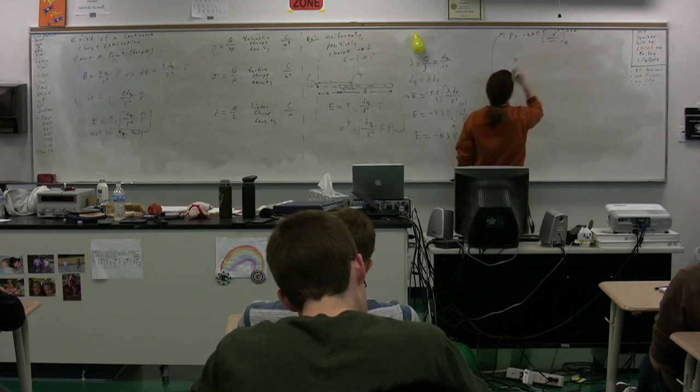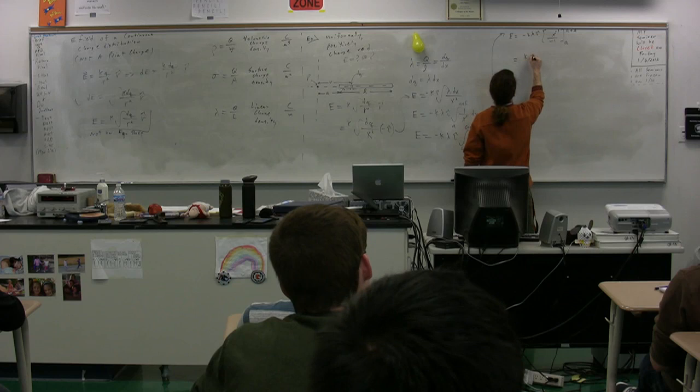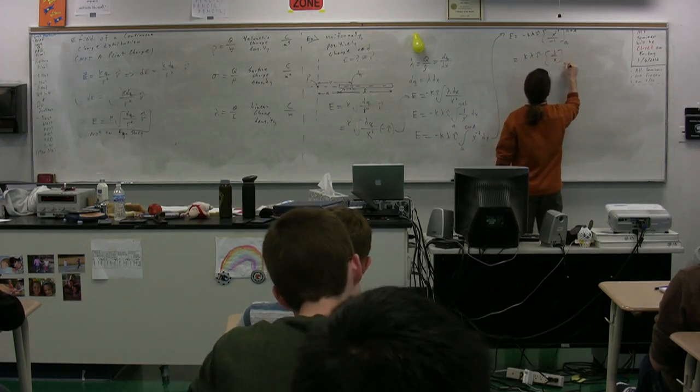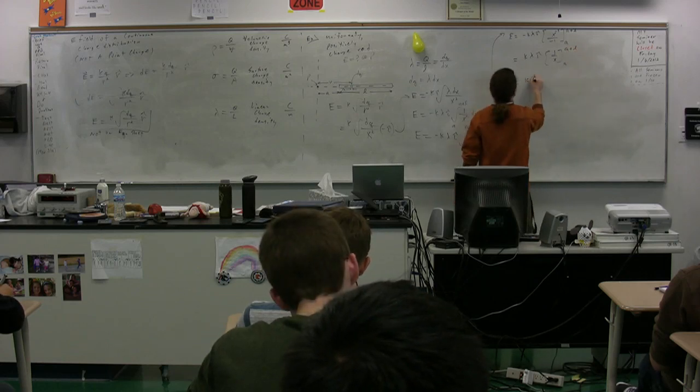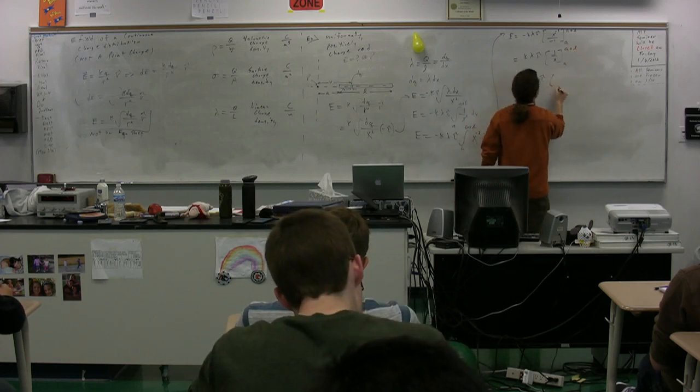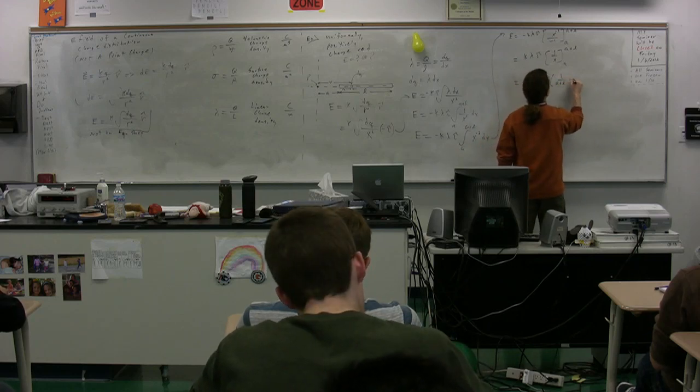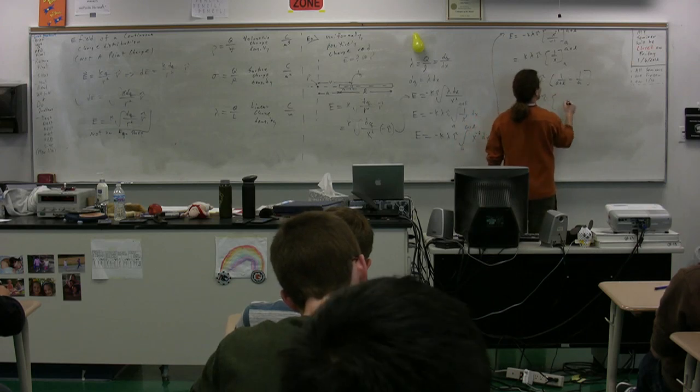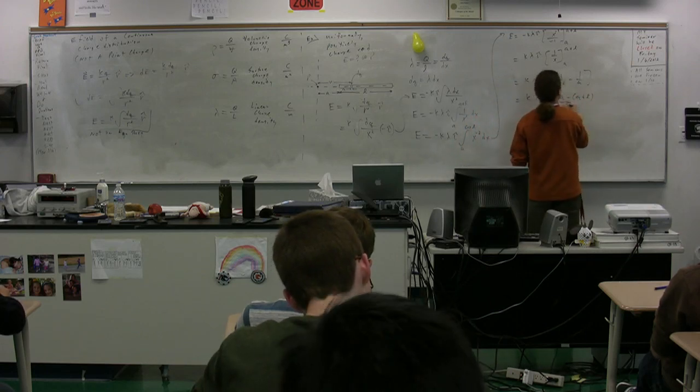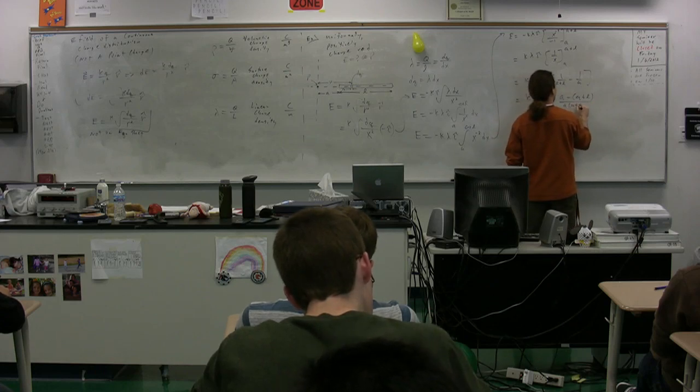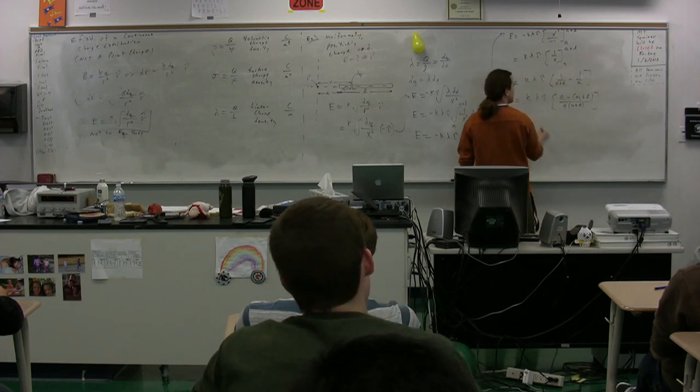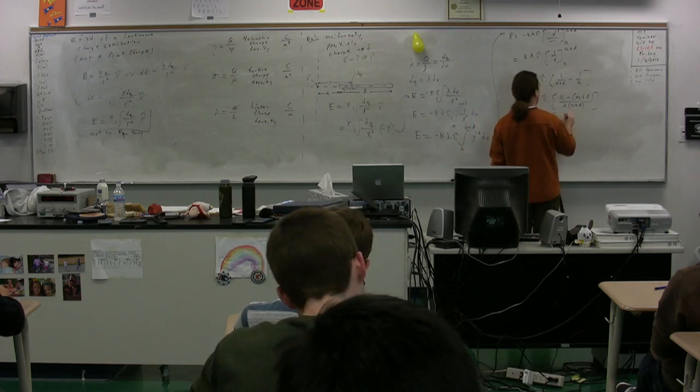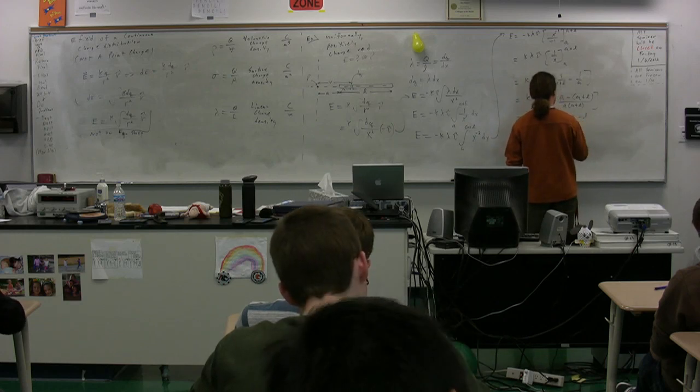So let's see. We have two negatives here, so that negative is going to cancel. We get k times lambda times i times the quantity 1 over x from a to a plus l. k lambda i, 1 over a plus l minus 1 over a. k lambda i, a minus the quantity a plus l divided by the quantity a times a plus l. Just getting a common denominator. Let's see. k lambda i, a minus a minus l, just to be absolutely clear.